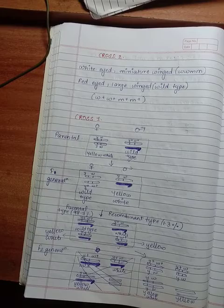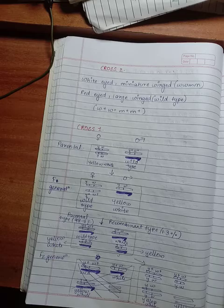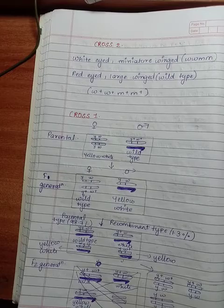For example, he found that the genes white and yellow were tightly linked and showed only 1.3% recombination, while white and miniature wings showed 37.2% recombination.